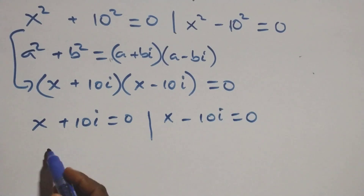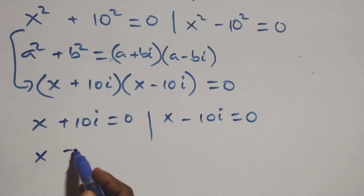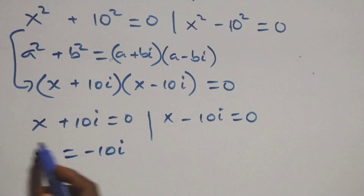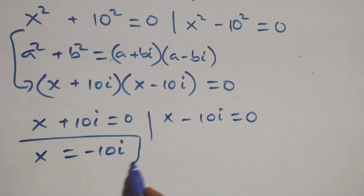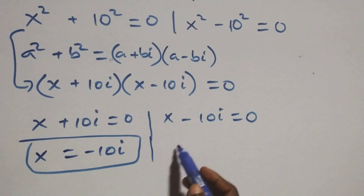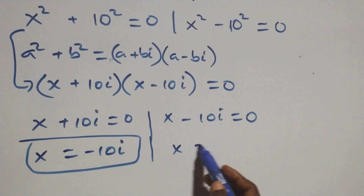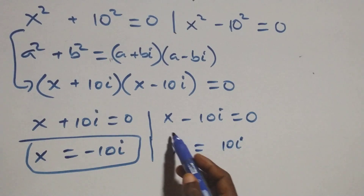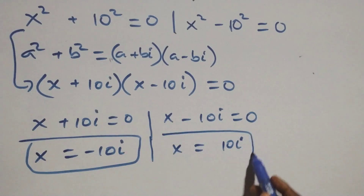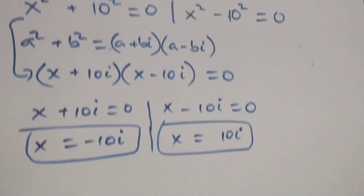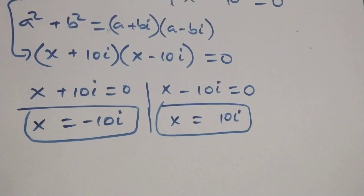So from this side, x equals minus 10i, which is a complex solution. We are getting two complex solutions from here.